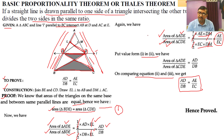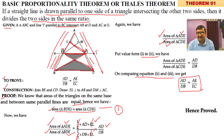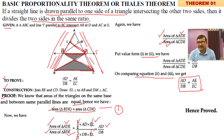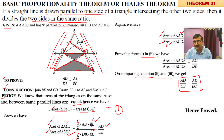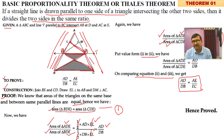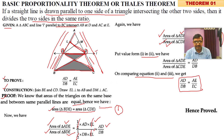To repeat: the statement of BPT is — if a straight line is drawn parallel to one side of a triangle intersecting the other two sides, then it divides the two sides in the same ratio. NCERT also gives two distinct points, but the meaning is clear. Now let's take the next theorem.